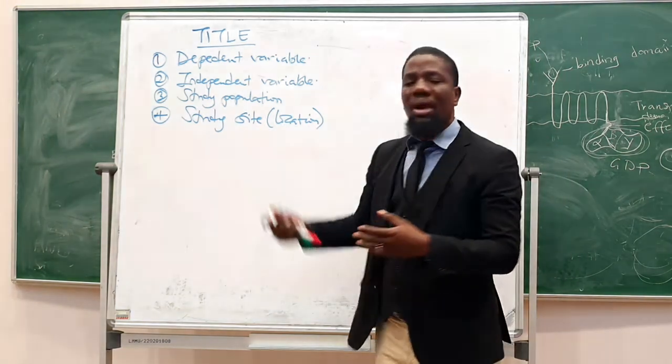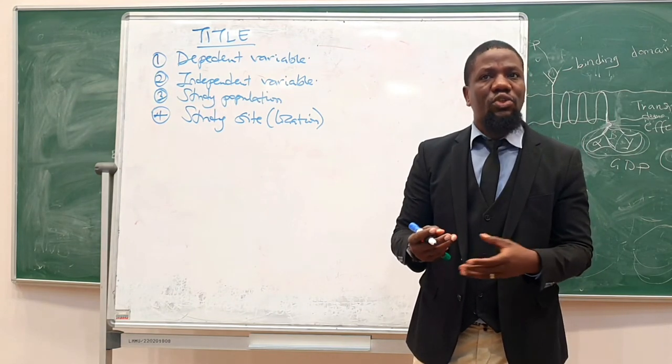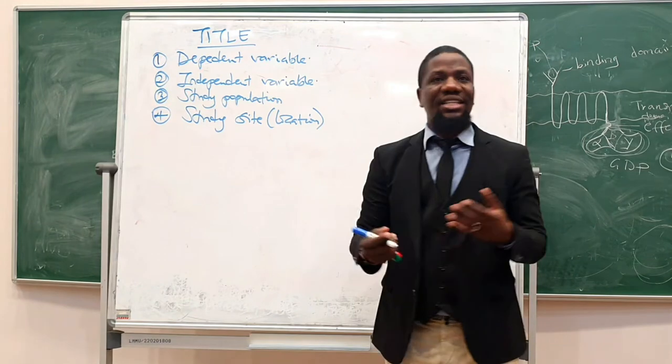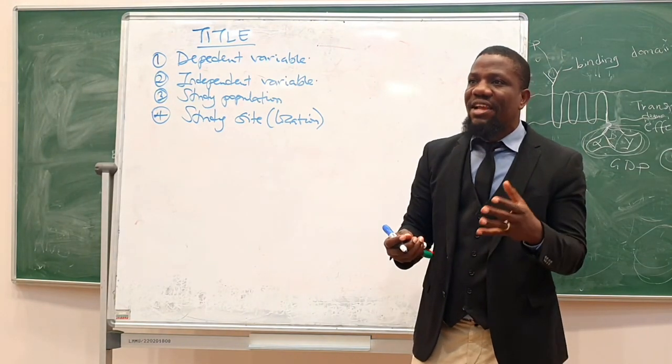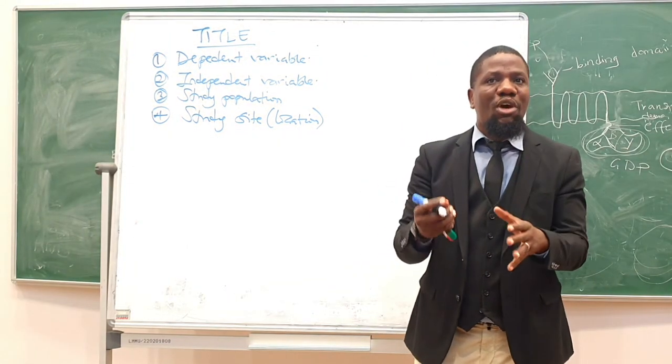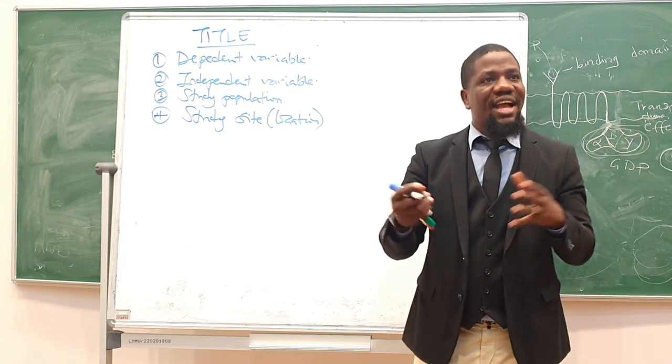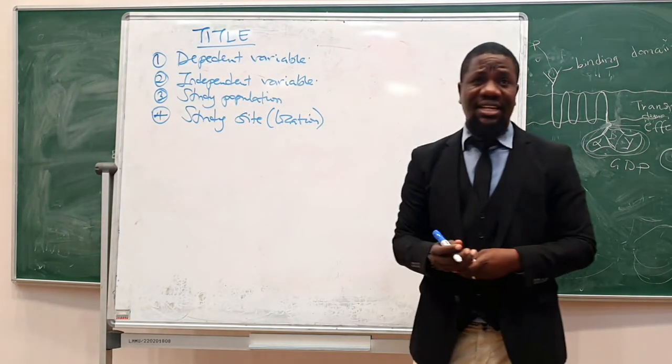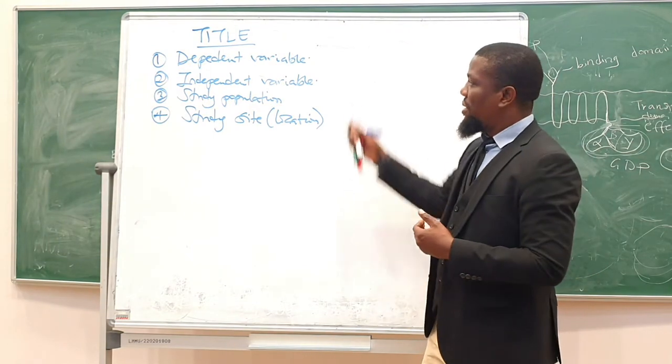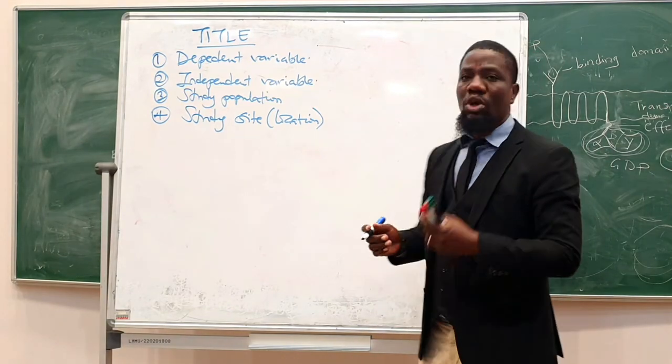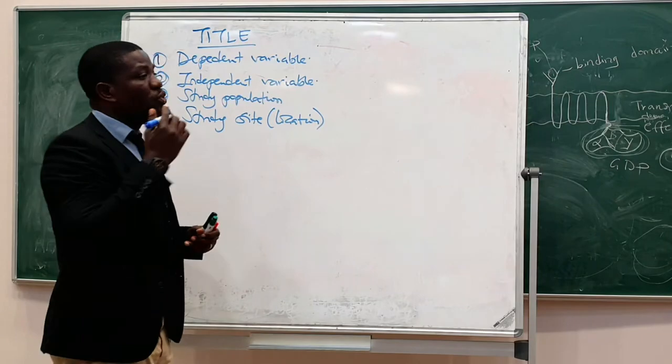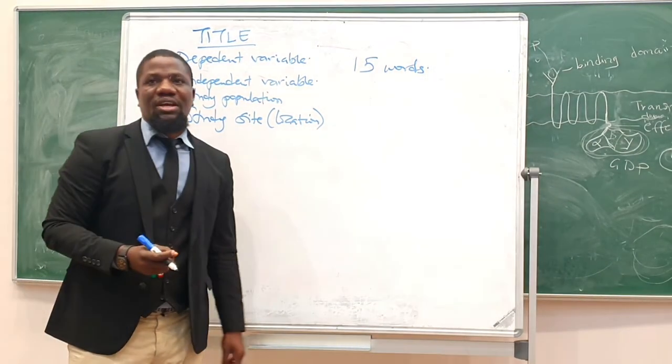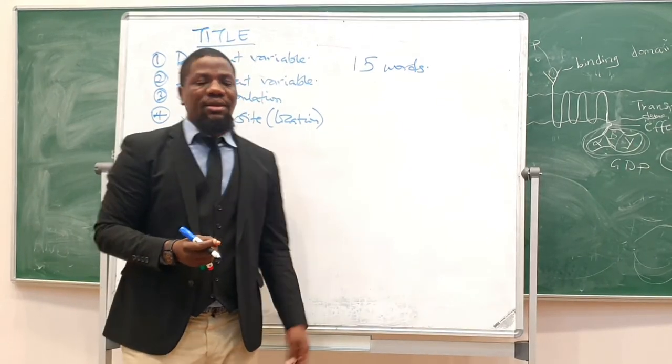Whom are you actually going to generalize these findings to, which location? Because sometimes you find that based on the kind of study you are doing, even the study site or the location of the study starts having an impact on the outcome. If you study participants from one area and participants from another area, they actually give you different outcomes. So you need to actually have a study site or the location of the study. You need to keep it about 15 words, about 15 words should be good enough.